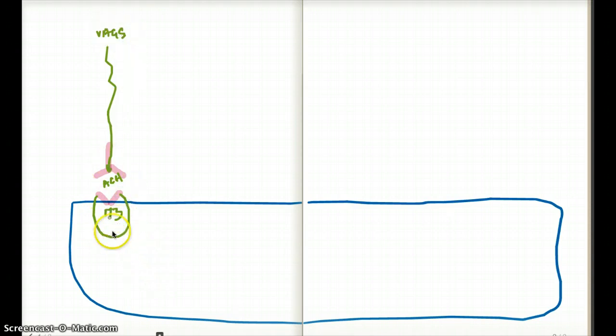So vagus is stimulating the M3, and M3 works through... Do you remember the mnemonic M1 and M3? This is for the GQ pathway. So it's going to stimulate the GQ pathway, and the GQ pathway makes IP3 and calcium.